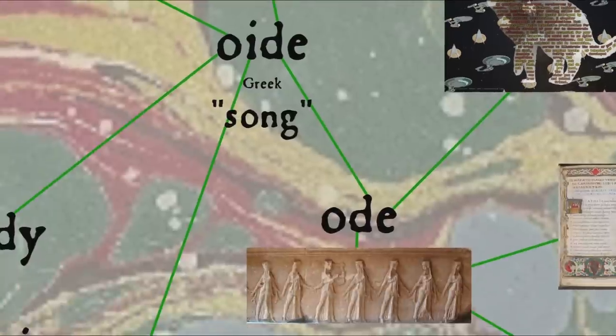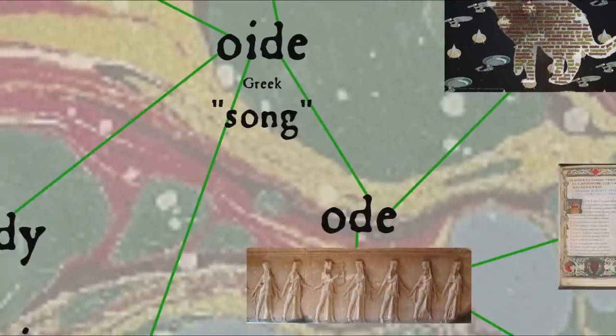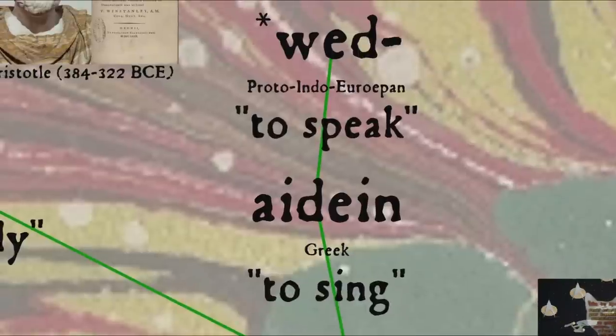We've already seen the etymology of the word ode, which comes from Greek oidē, song, also the second part of rhapsode. It can be traced further back to Greek aeidein, to sing, from the Proto-Indo-European root wed, to speak.